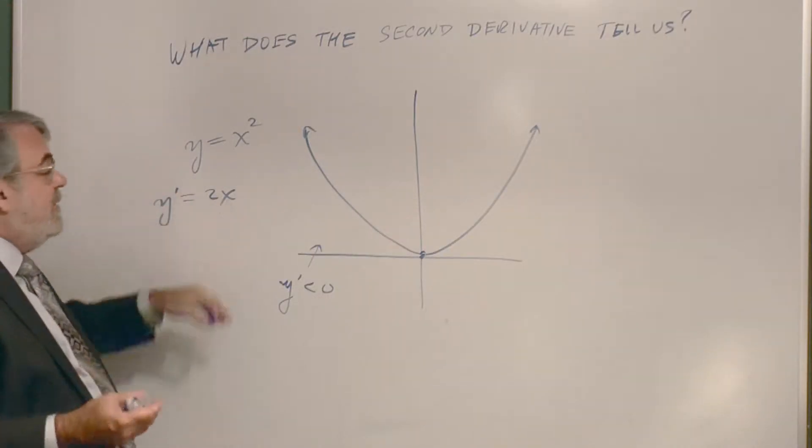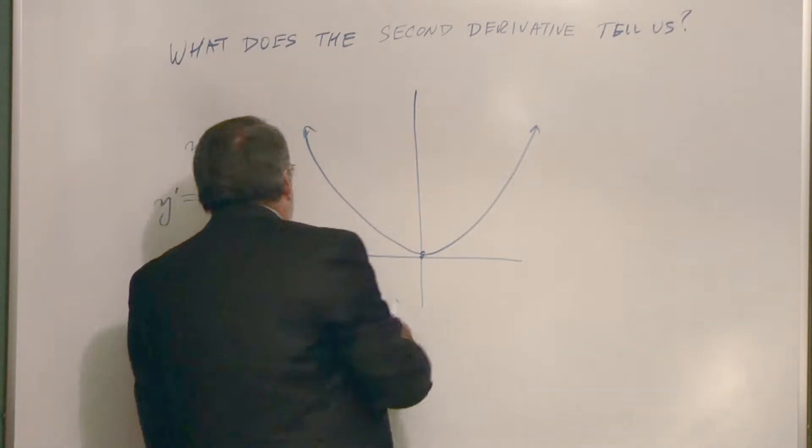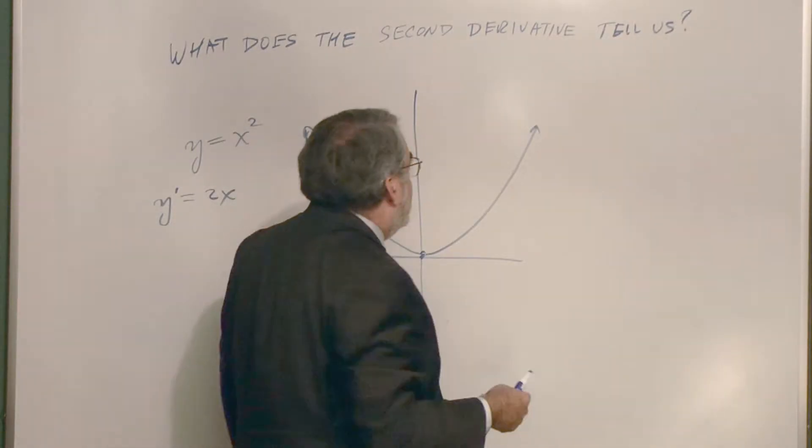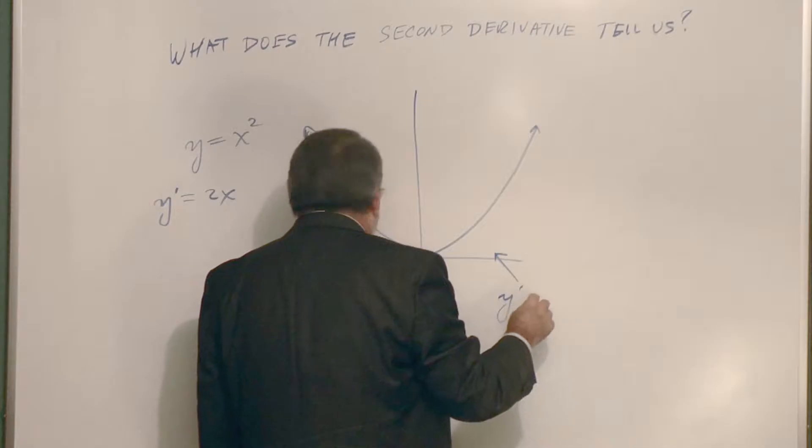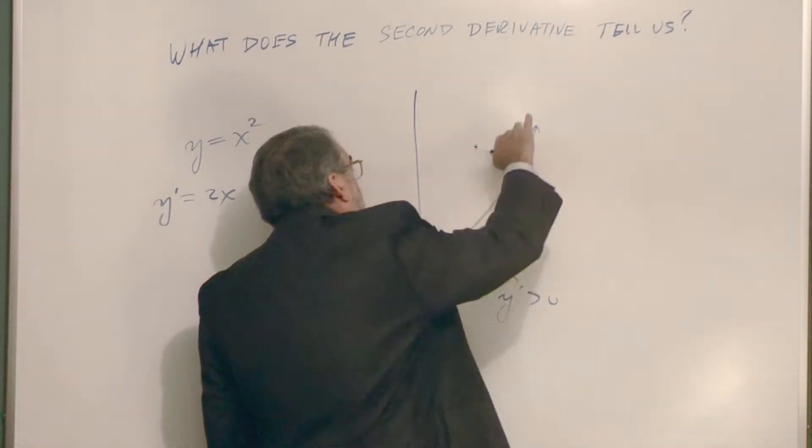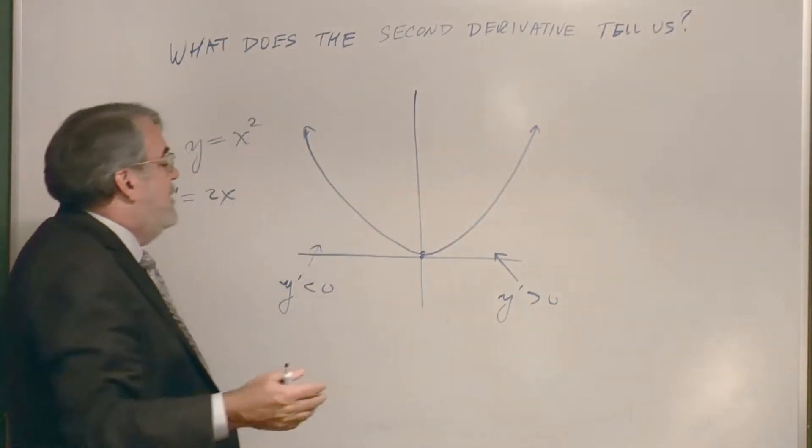And then if you plug in a positive number for x, we get a positive. 2 times x is positive. So over here, we expect the first derivative is positive. We expect it to be rising. And indeed it does. The derivative does this.